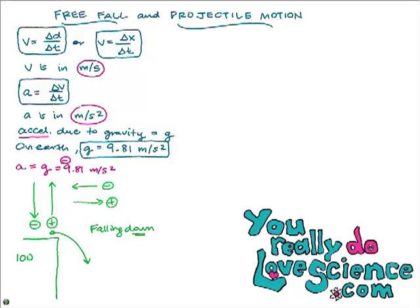They'll phrase it to try to trick you: 'The building is 100 meters high' or 'the height of the building is 100 meters.' Then they watch to see if you know that because the object's falling down, you make it negative 100 meters. When you plug the distance into your equations, you need to make both the distance negative and the acceleration due to gravity negative, because gravity is pulling down.